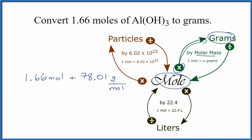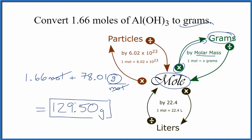The units for molar mass are grams per mole. When we multiply, we have moles on top and bottom. They cancel out, giving us grams. That's what we're looking for. We know we set this up correctly because the moles canceled out, leaving us with grams. We multiply and get 129.50 grams of aluminum hydroxide.